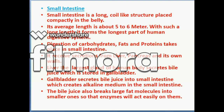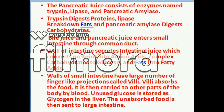The liver is the largest gland of the human body and secretes bile juice, which is stored in the gallbladder. The gallbladder secretes bile juice directly into the small intestine, creating an alkaline medium. The bile juice also breaks large fat molecules into smaller ones so that enzymes can act easily on them. Pancreatic juice consists of enzymes named trypsin, lipase, and pancreatic amylase. Trypsin digests protein, lipase breaks down fat, and pancreatic amylase digests carbohydrates.